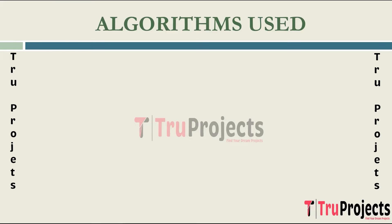The first algorithm used in the project is YOLO V5. YOLO stands for You Only Look Once — an object detection algorithm known for its speed and efficiency. It divides an image into a grid and predicts bounding boxes and class probabilities for each grid cell. YOLO processes the entire image in one forward pass, making it faster than many other object detection algorithms.